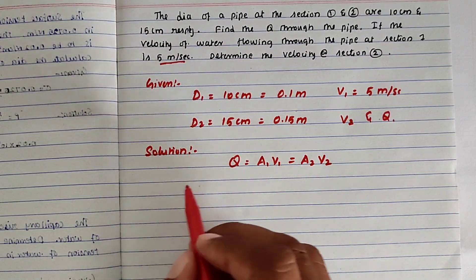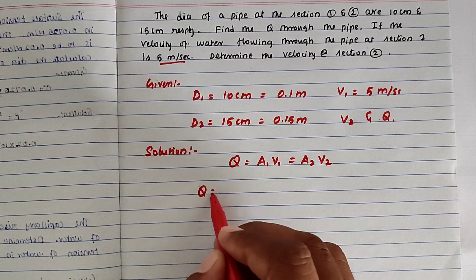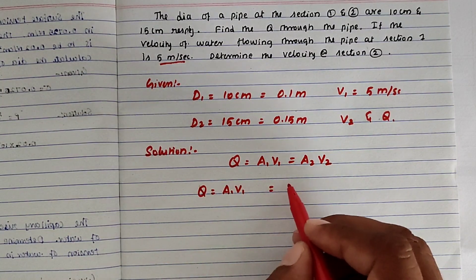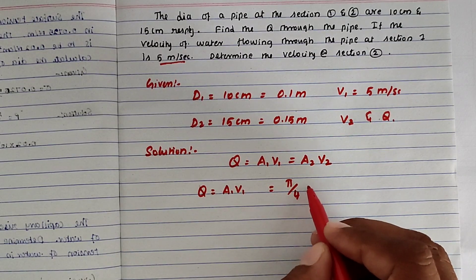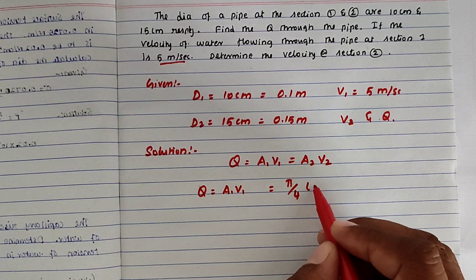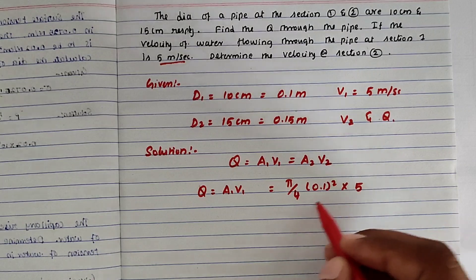First, we can find Q. Q equals A1 times V1. Substituting the values: A1 is pi by 4 into D square, so diameter 1, 0.1 square, times V1 which is 5 meter per second.